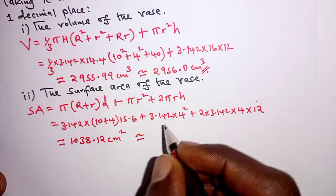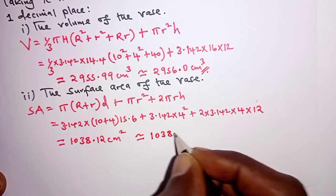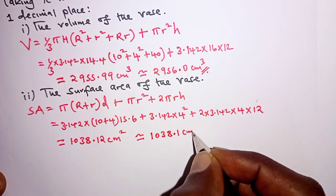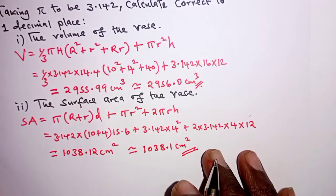when approximated, we get 1038.1 square centimeters. That is correct to one decimal place, as it has been required in the equation.